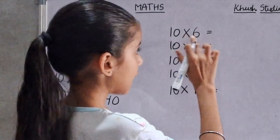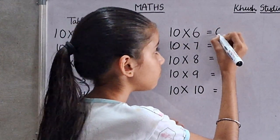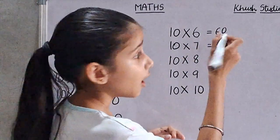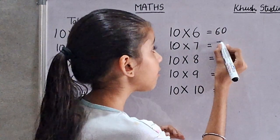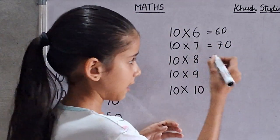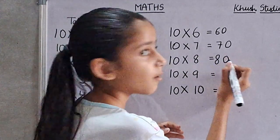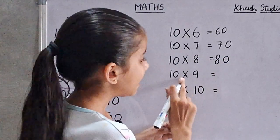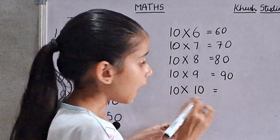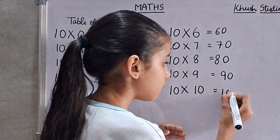Ten sixes are sixty. Ten sevens are seventy. Ten eights are eighty. Ten nines are ninety. Ten tens are one hundred.